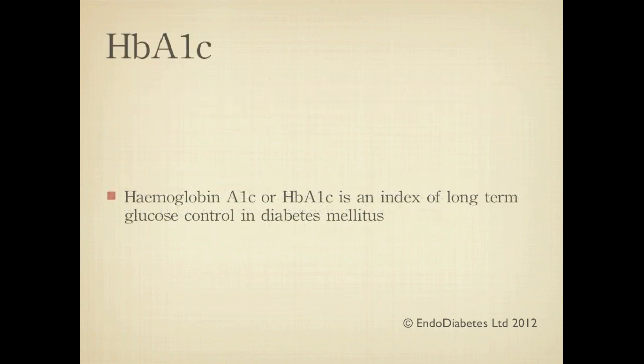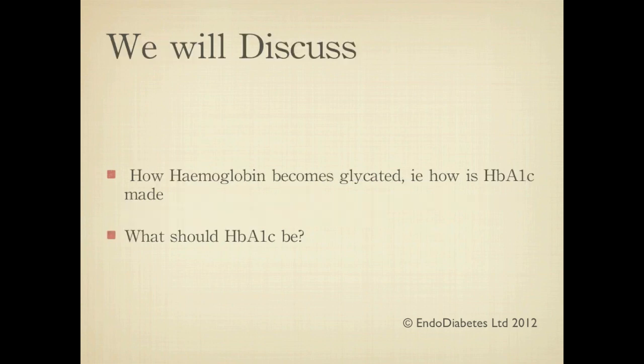Hemoglobin A1c, or HbA1c for short, is a measure of long-term glucose control in people with diabetes mellitus. In this video, we will discuss how hemoglobin becomes glycated — in other words, how HbA1c is made. We will also see what HbA1c should be according to various guidelines.